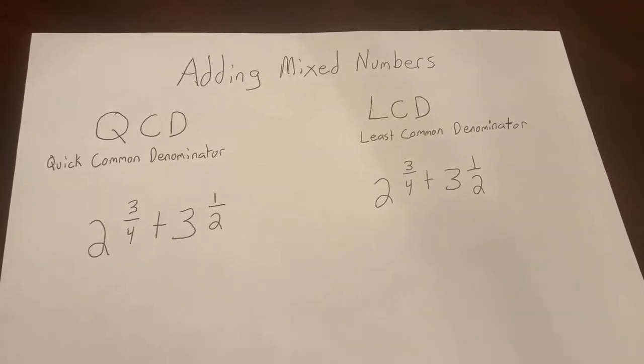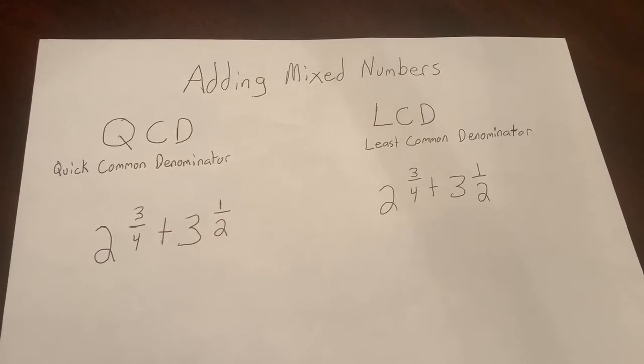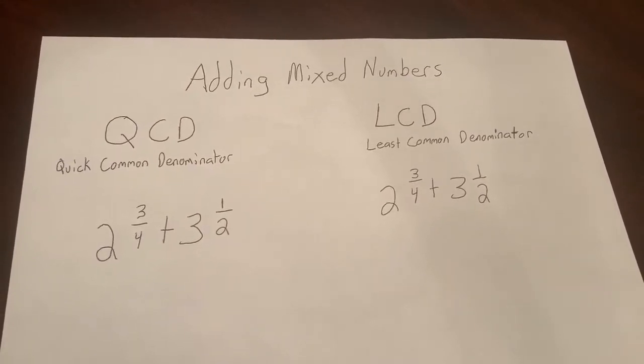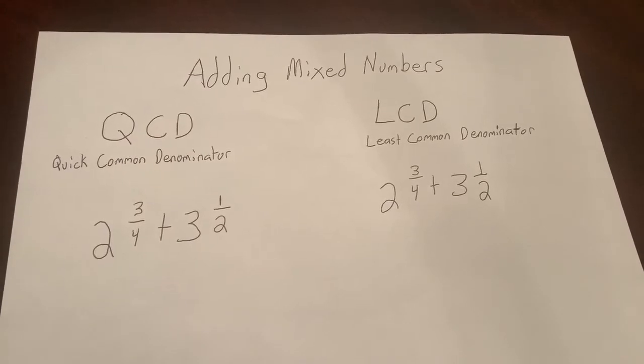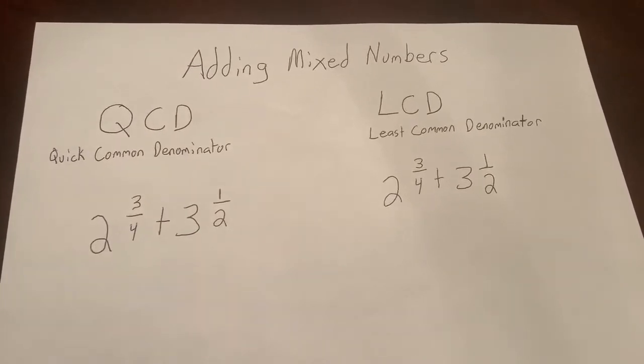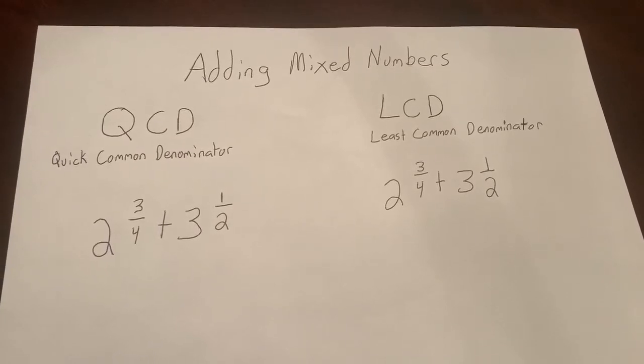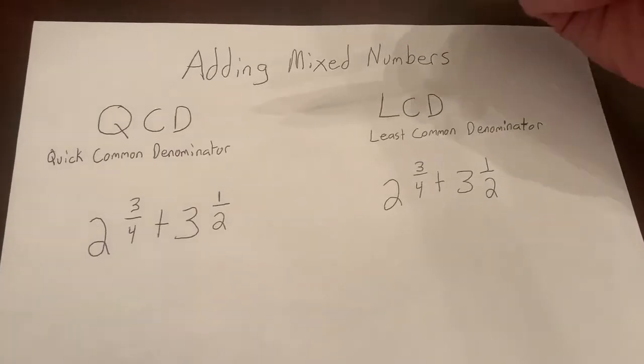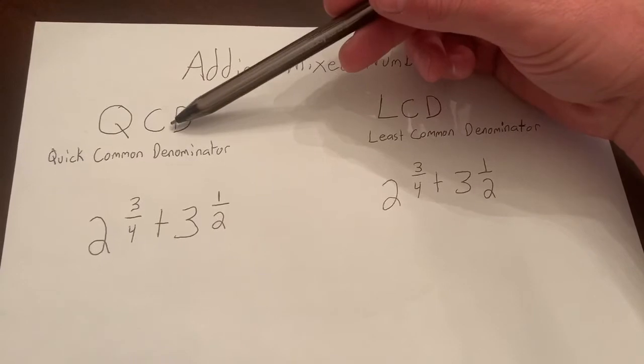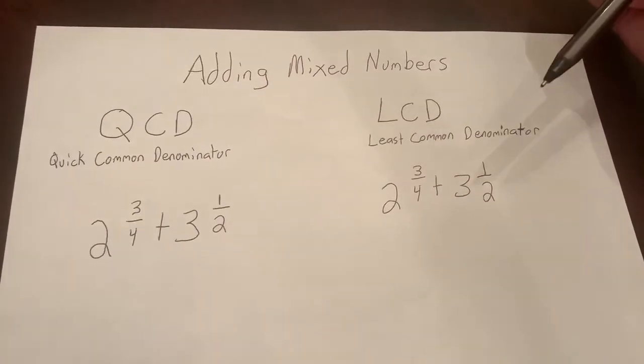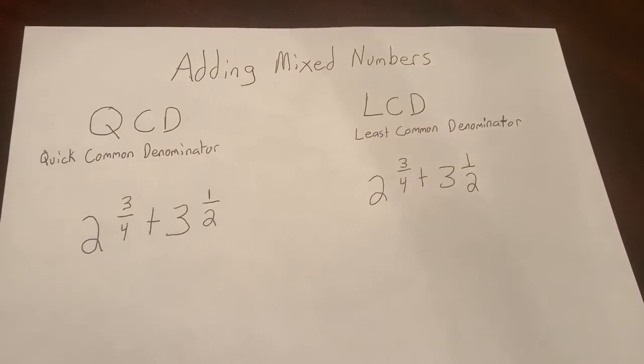Hey everyone, we're back. Caught lots of crappie this weekend, can't complain about that. Today's review topic is adding mixed numbers. So we've talked about QCD this year - Quick Common Denominator - and LCD - Least Common Denominator.